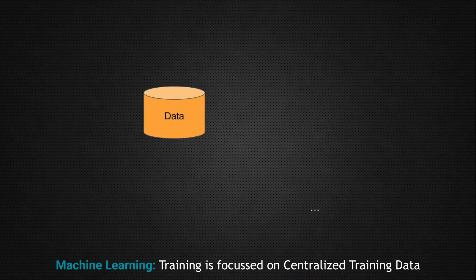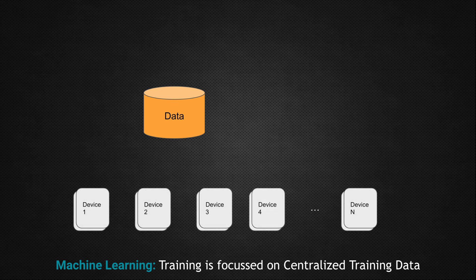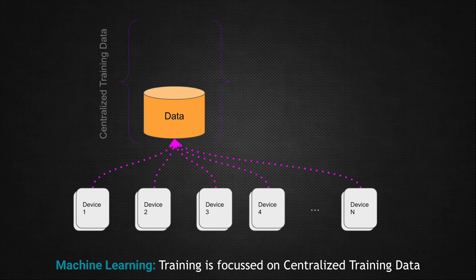Before we start learning about federated machine learning, let's understand what regular machine learning or machine learning on centralized data looks like. Machine learning starts with data, and you need lots of it. That data can be collected from tens of thousands of devices or any kind of sources that generate data needed for machine learning. All of this data is stored at a centralized location within the corporate server or enterprise machines.